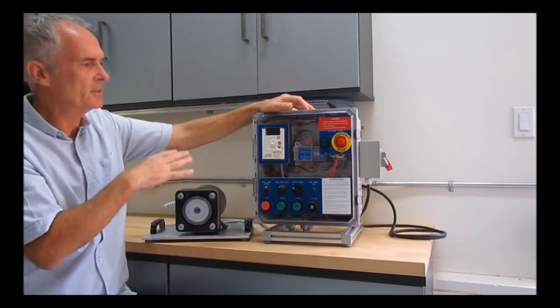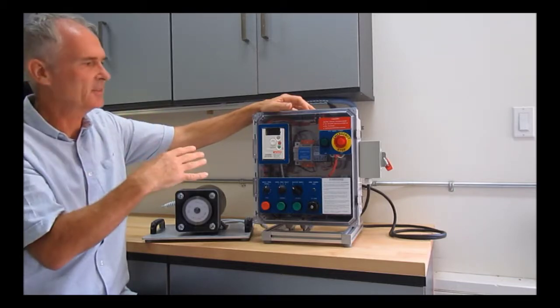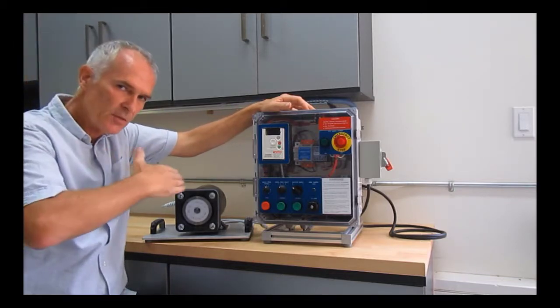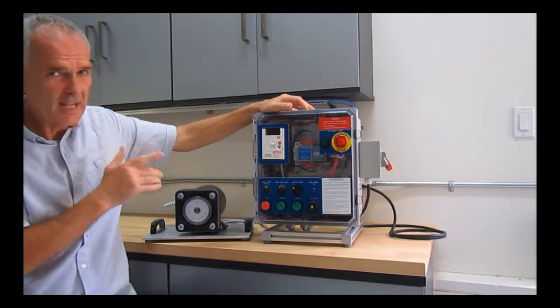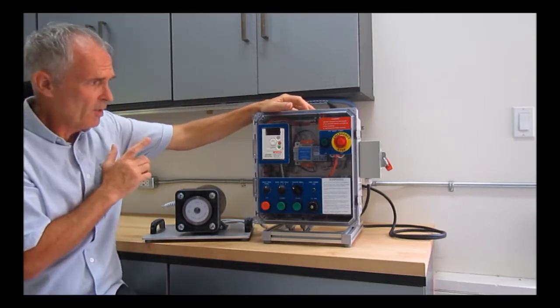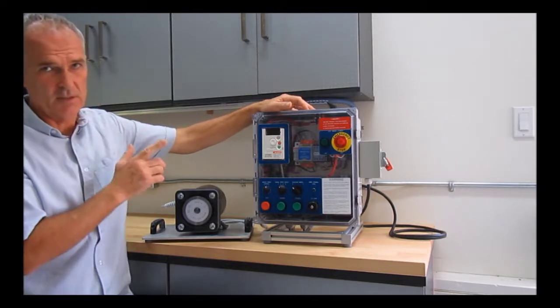The other type of control is what's called standard mode or scalar mode. A lot of you may be familiar with the term volts per hertz. It uses that volts per hertz ratio - it scales the voltage to the frequency of the motor and uses it through the operating range of the motor.